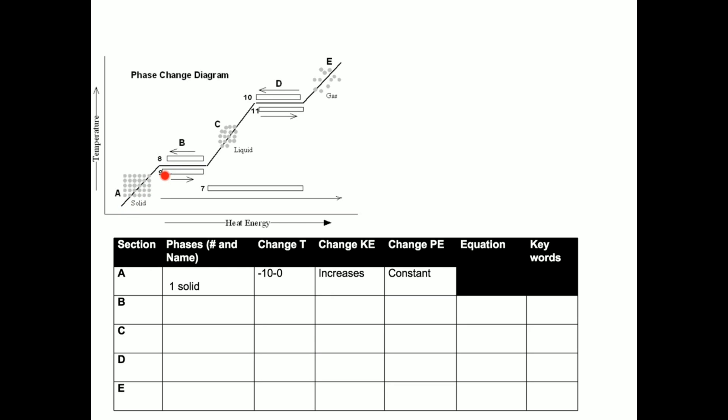When solid is warming, its temperature is increasing, but its potential energy or the position between the particles is the same. Solid particles are in fixed geometric crystal lattice structures. The position of their particles does not change until it reaches its melting point, so the potential energy is constant.